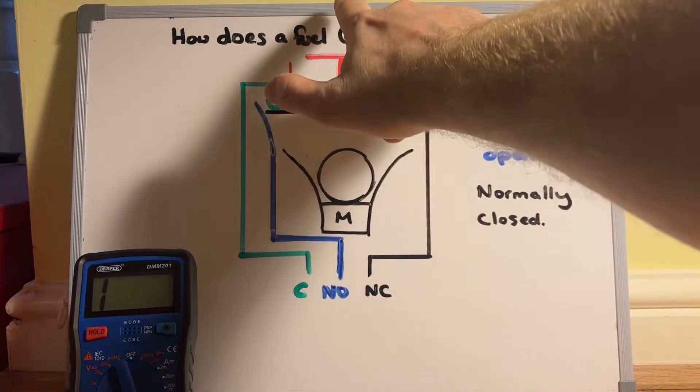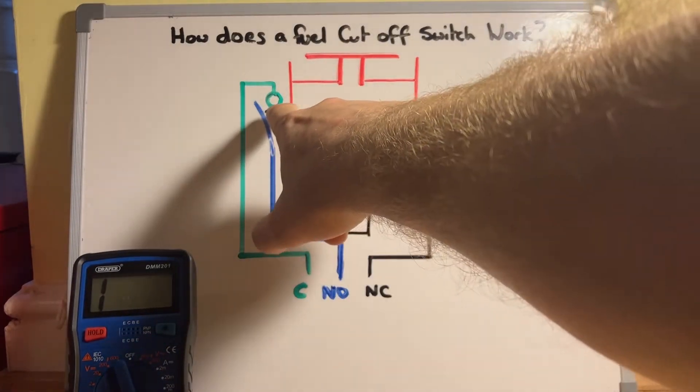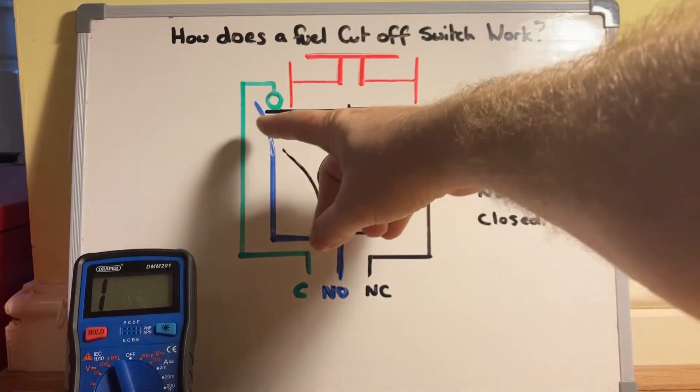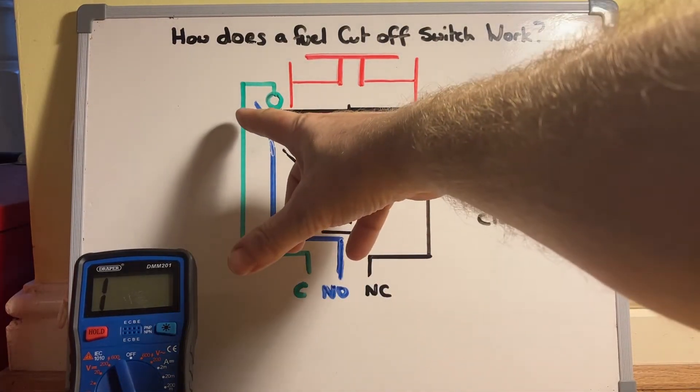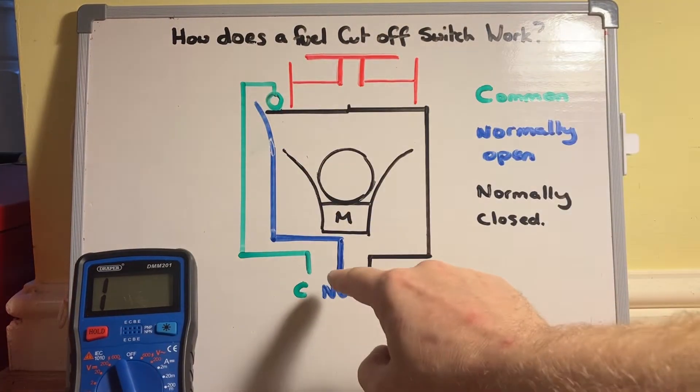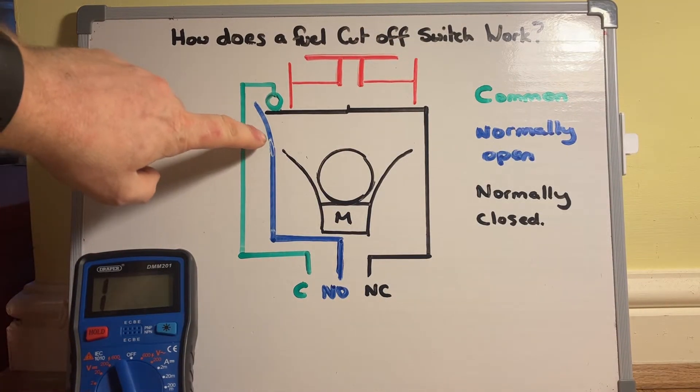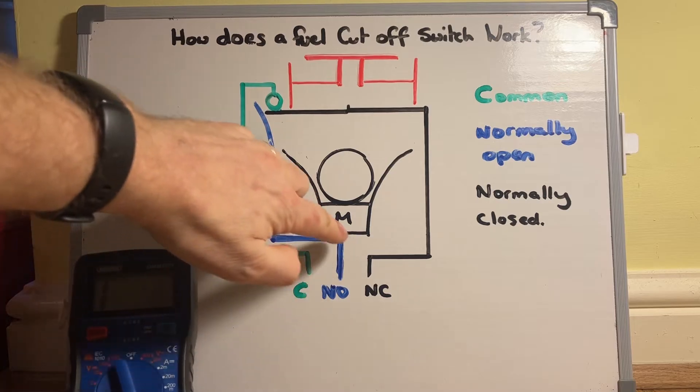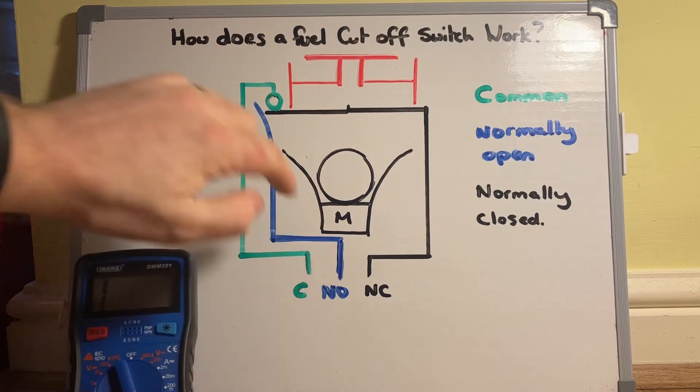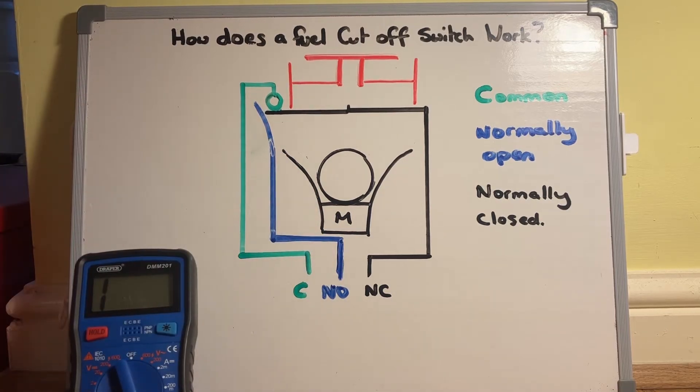What that does is it pushes the button up and it also brings in this section of wire here which allows this normally open circuit to touch that contact and complete. So this circuit is broken, the fuel is cut off, and then the normally open section hits the contact. Now this is a complete circuit to tell the ECU that the fuel pump's been turned off.